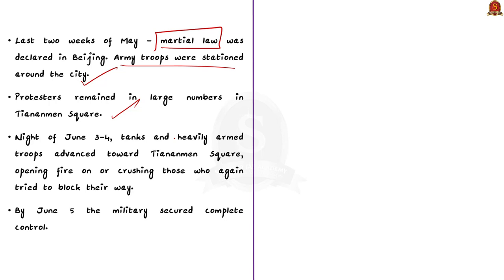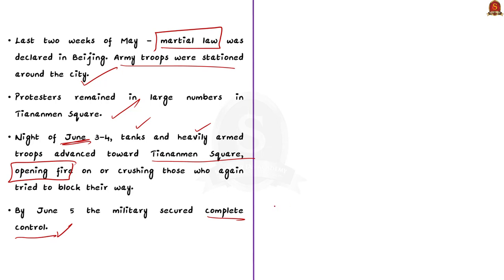By the beginning of June, the government was ready to act. On the night of June 3rd and 4th, tanks and heavily armed troops advanced towards Tiananmen Square and opened fire on protesters. By morning the area had been cleared. The military also moved forcibly against protesters in several other Chinese cities. By June 5th, the military had secured complete control in the country — it was a violent, bloody crackdown.